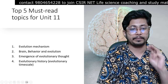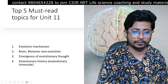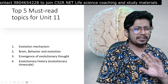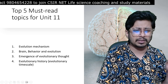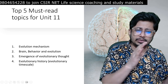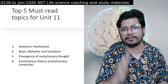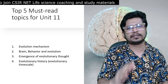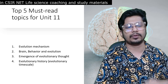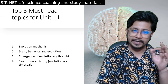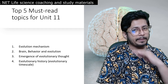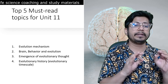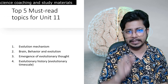To finalize the five topics: first, evolution mechanism; second, population genetics; third, brain, behavior, and evolution; fourth, emergence of evolutionary thought; and fifth, evolutionary history — the geological time scale — which is very, very important. Keep these five topics in mind and prepare them thoroughly to be ready for Unit 11.